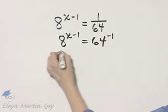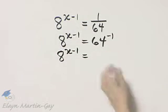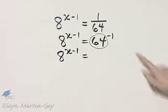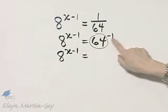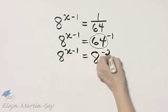And then let's continue. I'm just rewriting the left side, 64 itself, 64 is 8 squared. So the square would be multiplied by negative 1 and this is 8 to the negative 2 power.